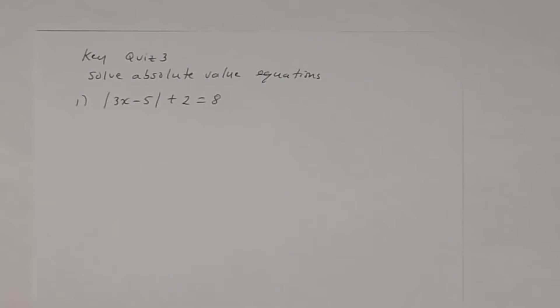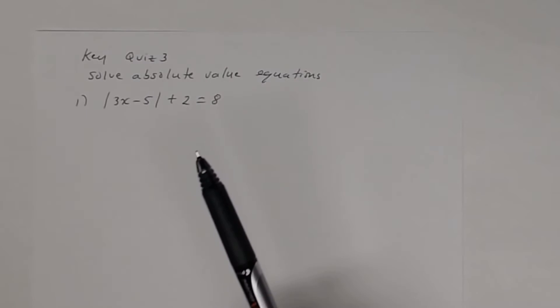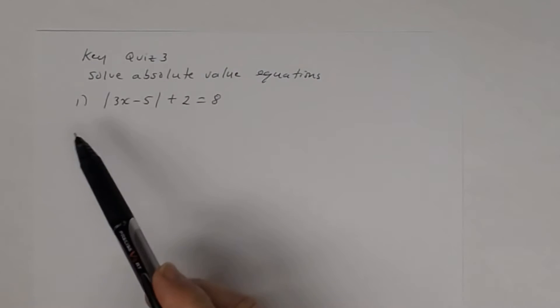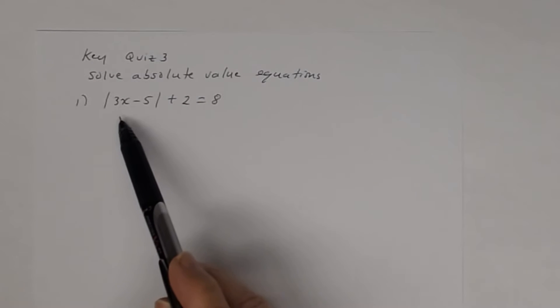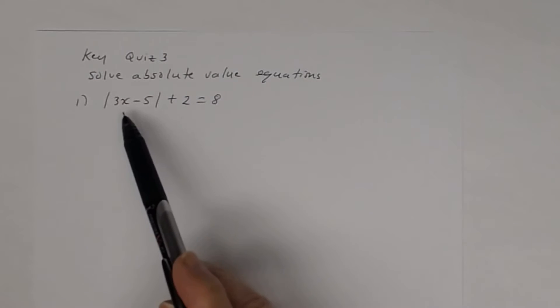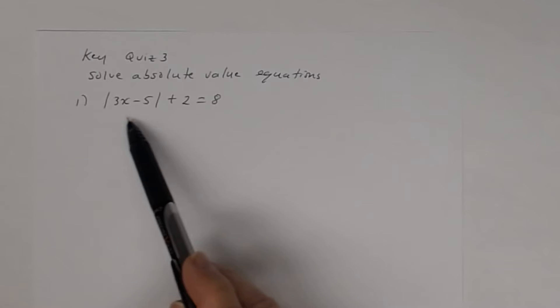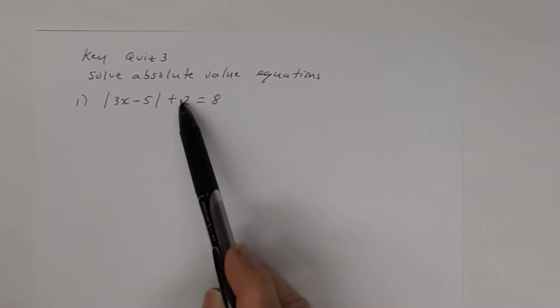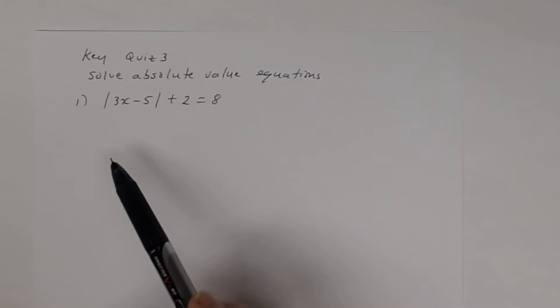This is a key to quiz 3, and on quiz 3 you want to solve absolute value equations. Number 1, you have this absolute value equation: the absolute value of 3x minus 5, plus 2 is equal to 8.